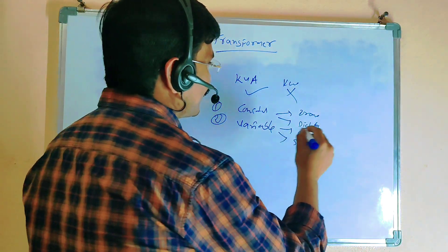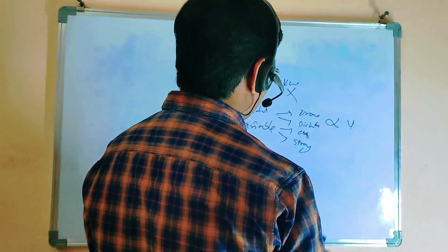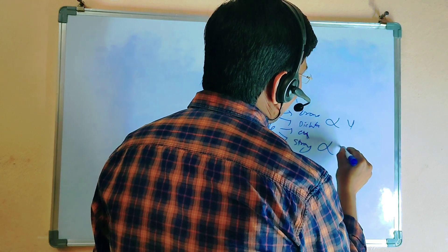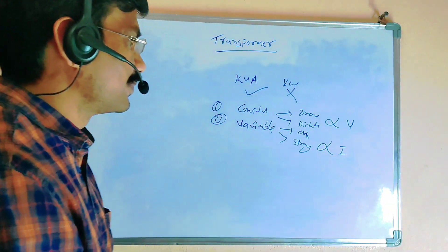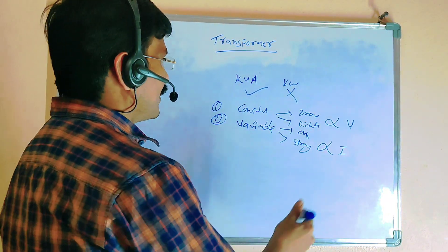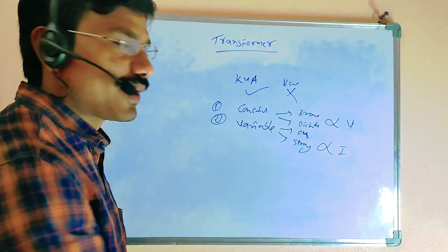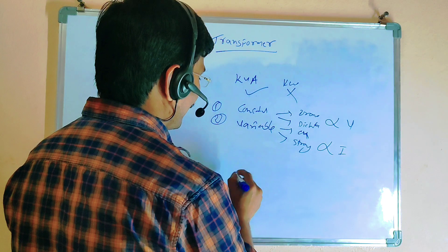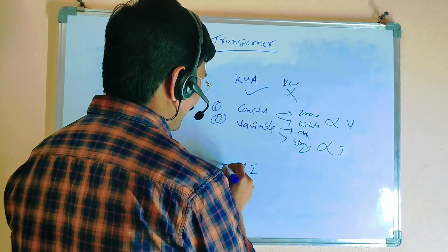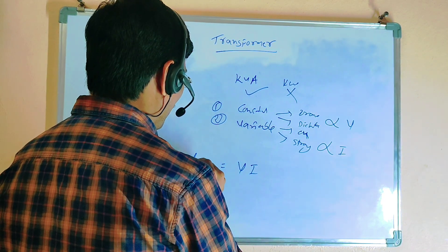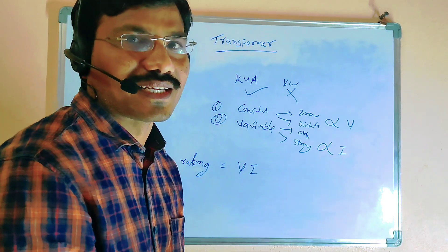Constant losses depend on voltage. Variable losses depend on current. The transformer rating comes from these losses only - V and I. This is the rating of the transformer.